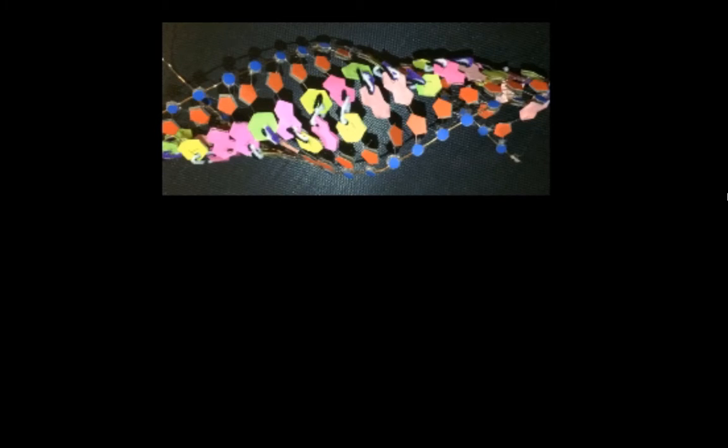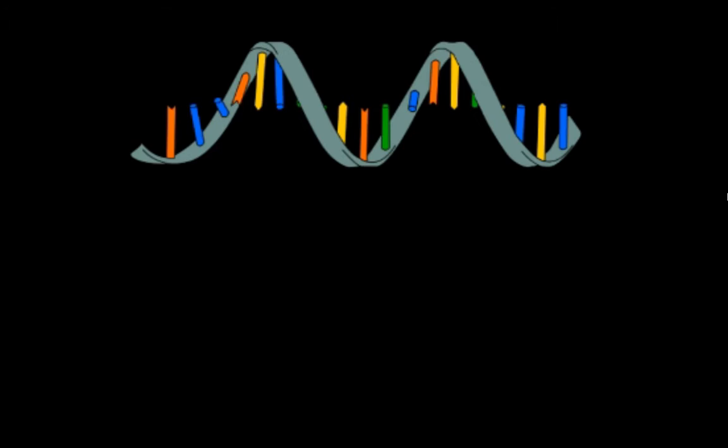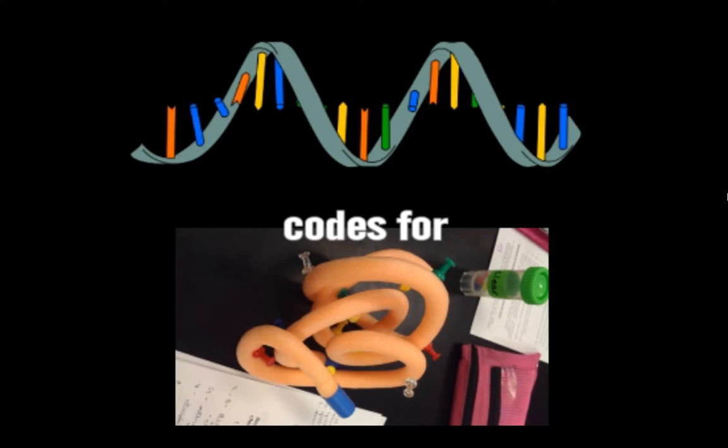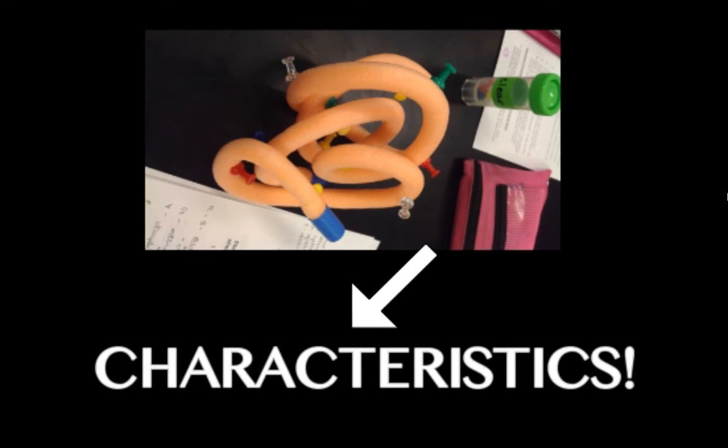The central dogma is the process where DNA codes for RNA, then RNA creates proteins, and the proteins then cause characteristics. There are three parts to the central dogma.